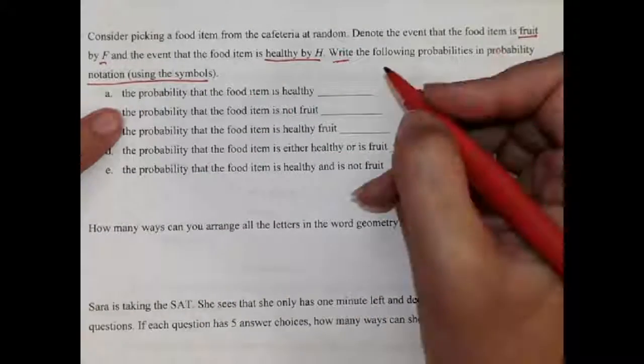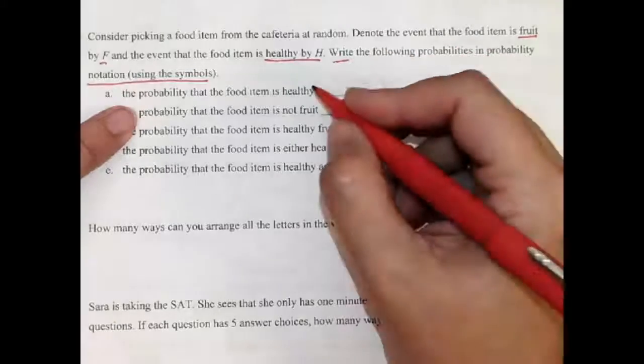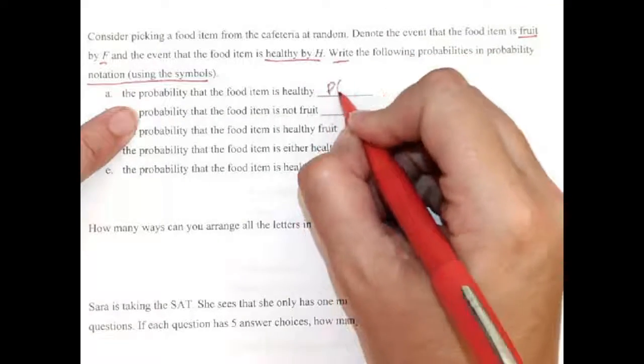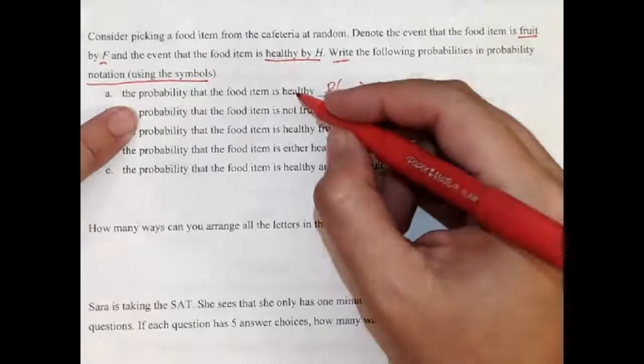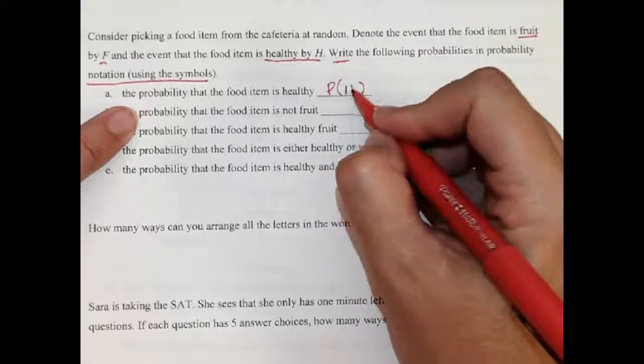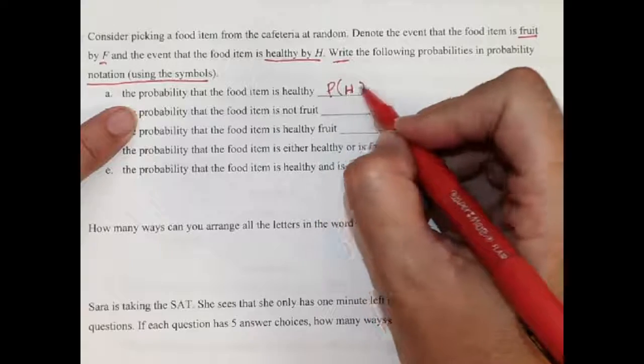So first it starts with an easy one, the probability that it's healthy. Well, we write all probabilities just like this. You saw this on other questions. Healthy is H, so it just goes like this, the probability that it's healthy. That's all you have to do.